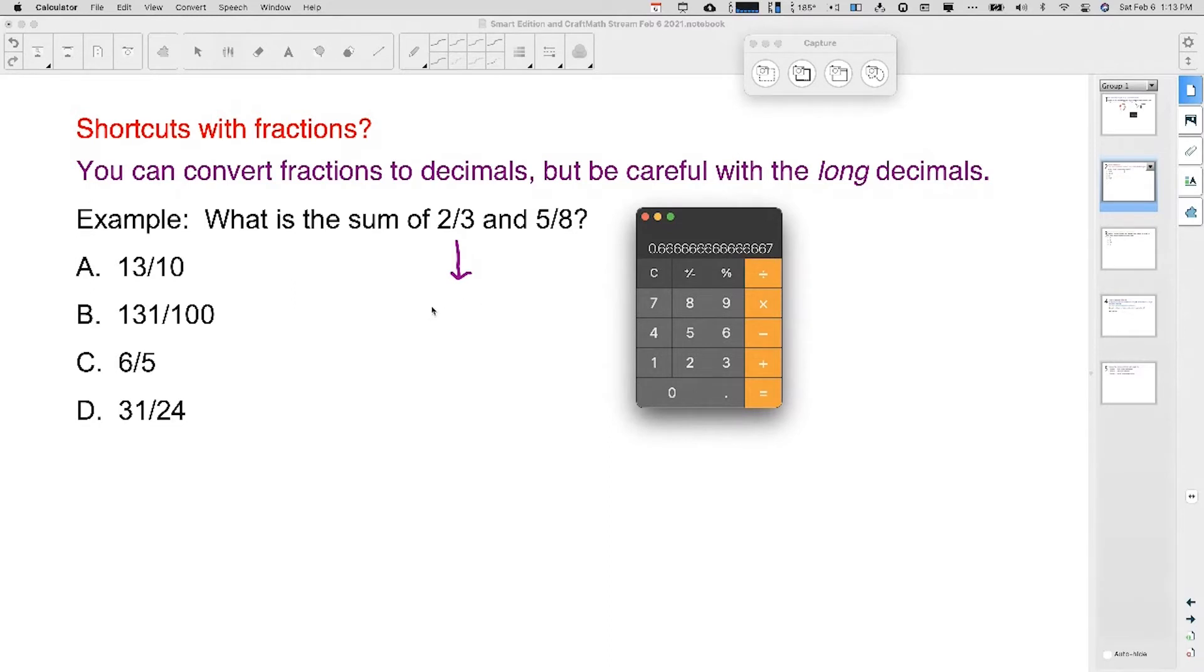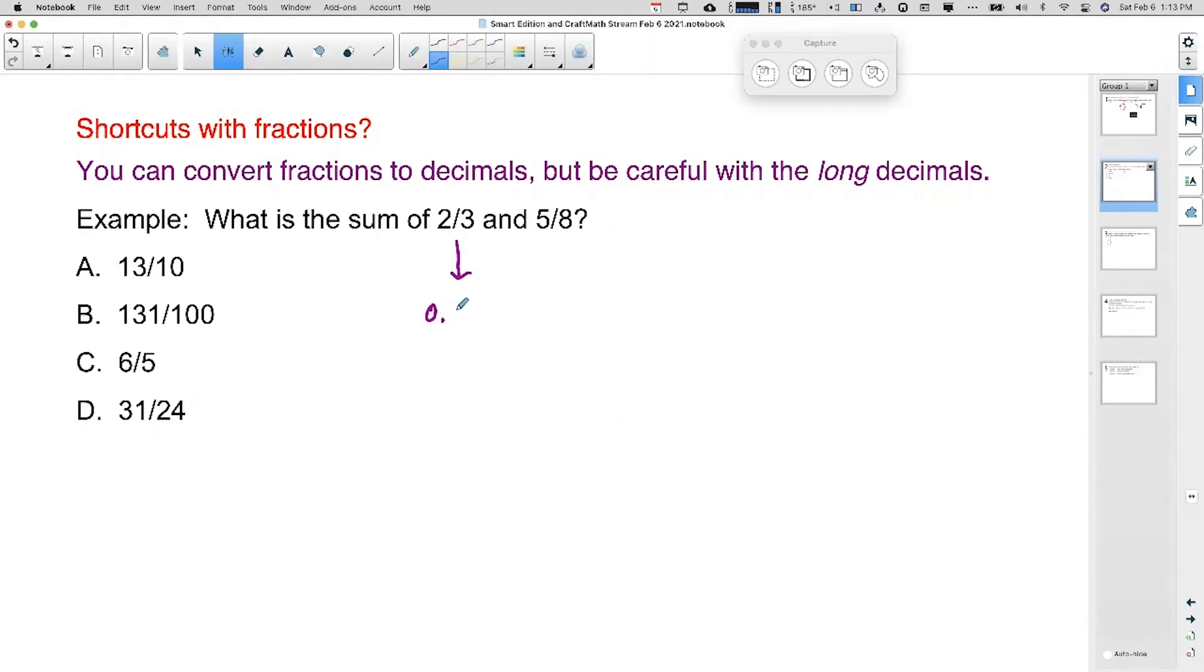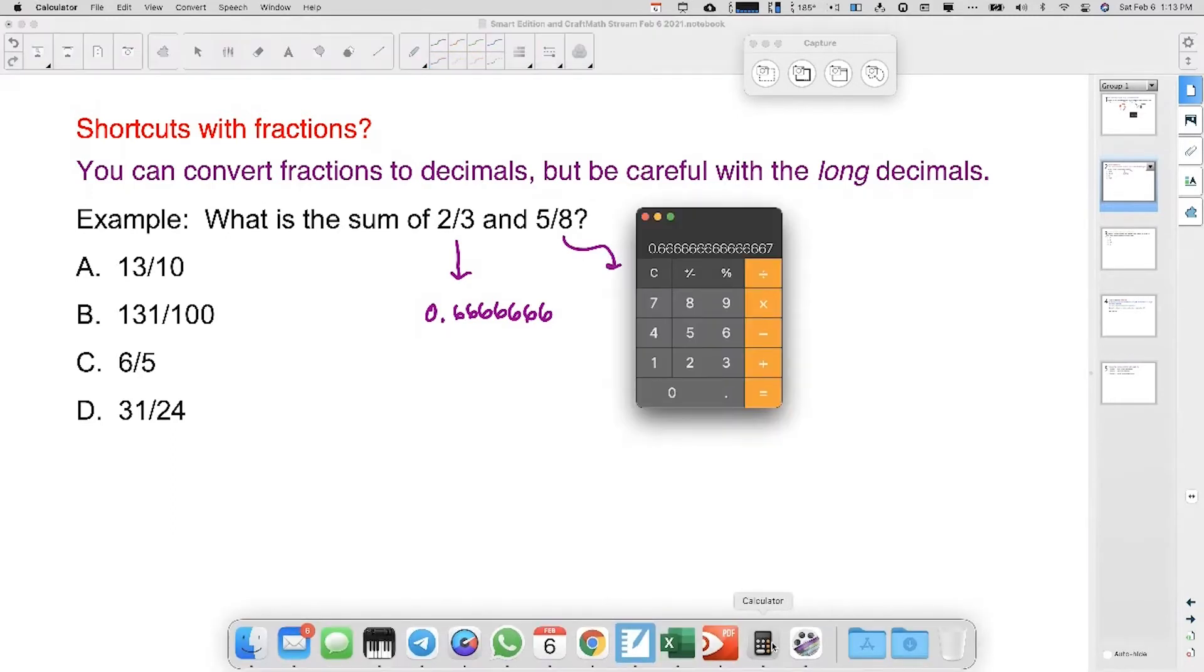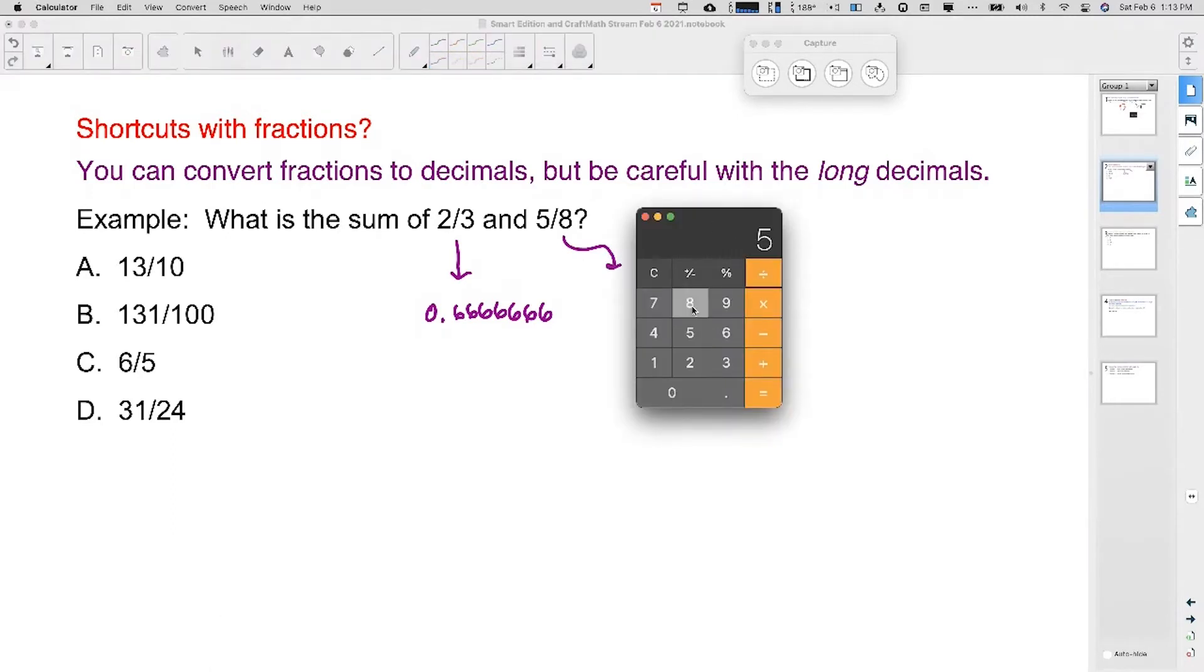But what I'm going to do here is I'm not just going to write 0.6. I'm going to write a bunch of them down. This is what I mean by being careful. And let's repeat the process for five divided by eight, or five eighths. Now this is going to be a nice decimal and we get 0.625.